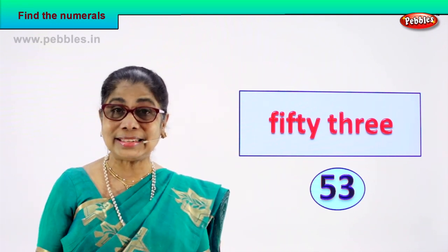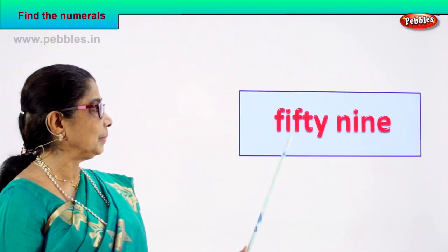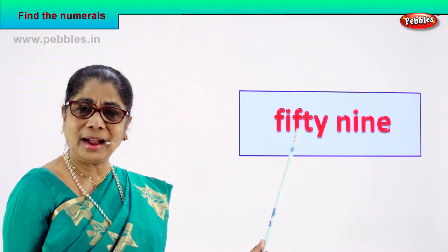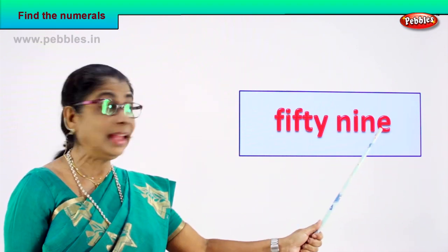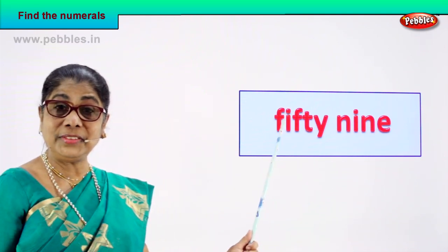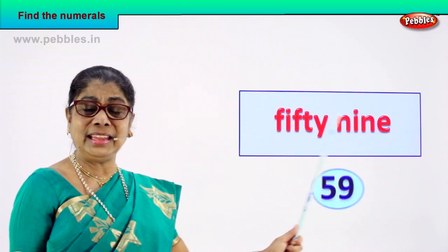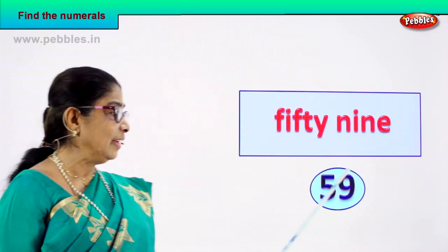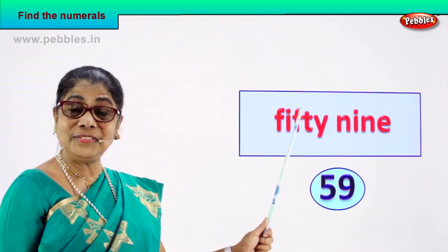Shall we take our next number name? Look. Read with me: F-I-F-T-Y, 50. N-I-N-E, 9. 59! How do you write the numeral? 59. 5 and 9 — 59. 5 and 9 — 59. Are you enjoying the exercise?